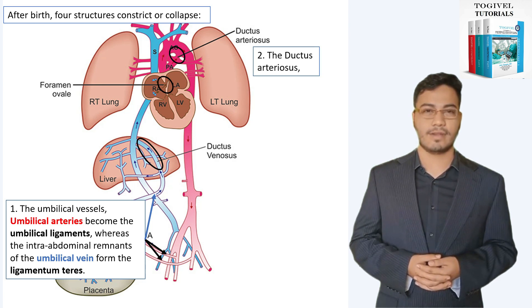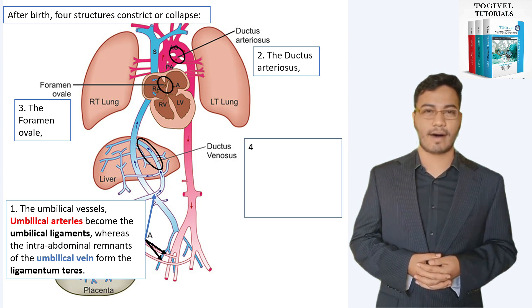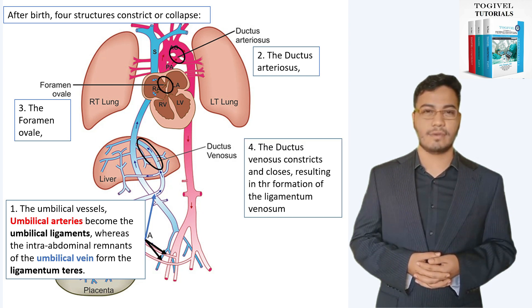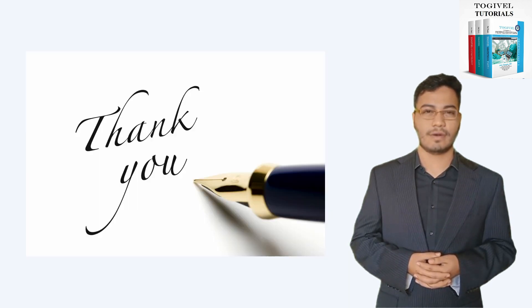Two: the ductus arteriosus. Three: the foramen ovale. And four: the ductus venosus constricts and closes, resulting in the formation of the ligamentum venosum. This concludes our tutorial today.